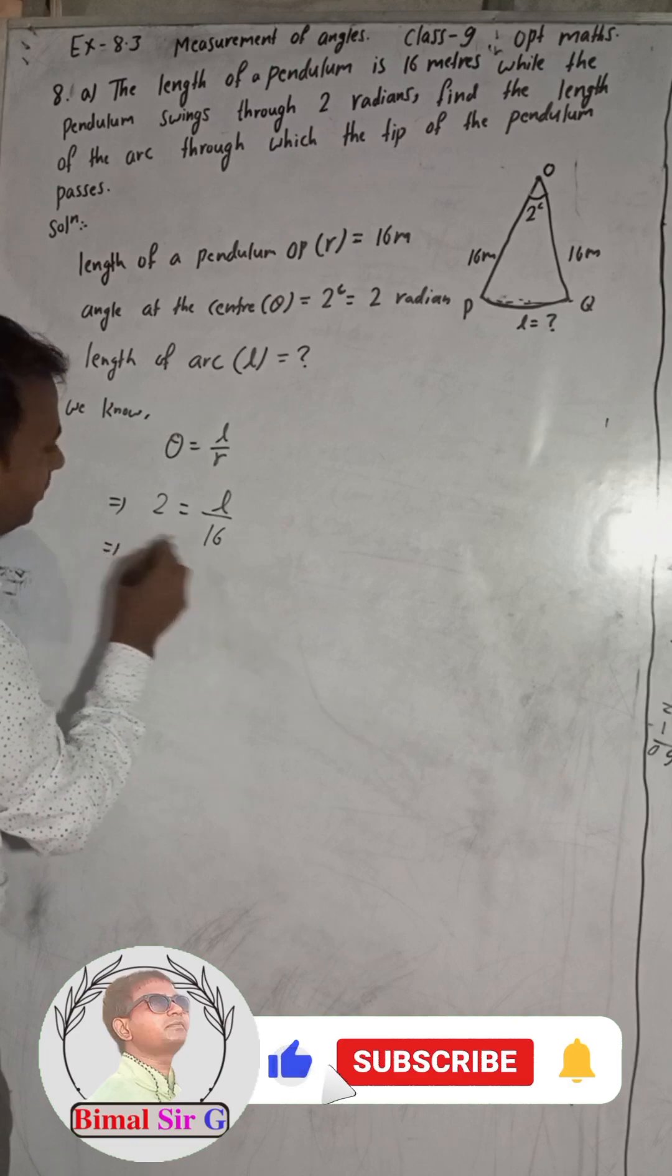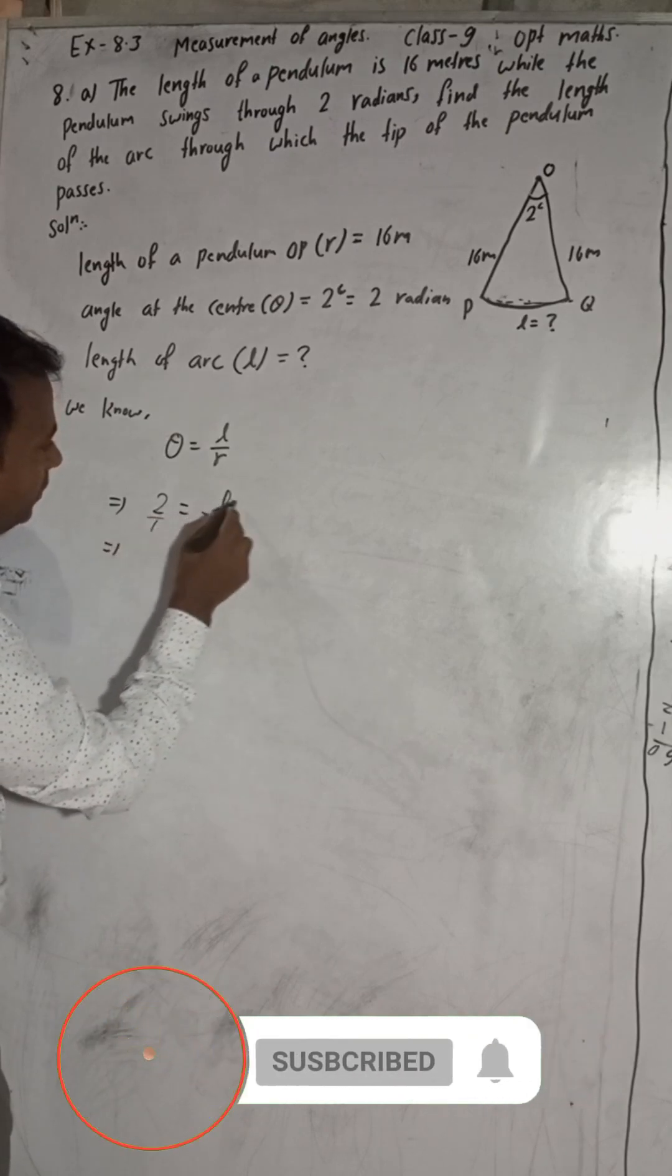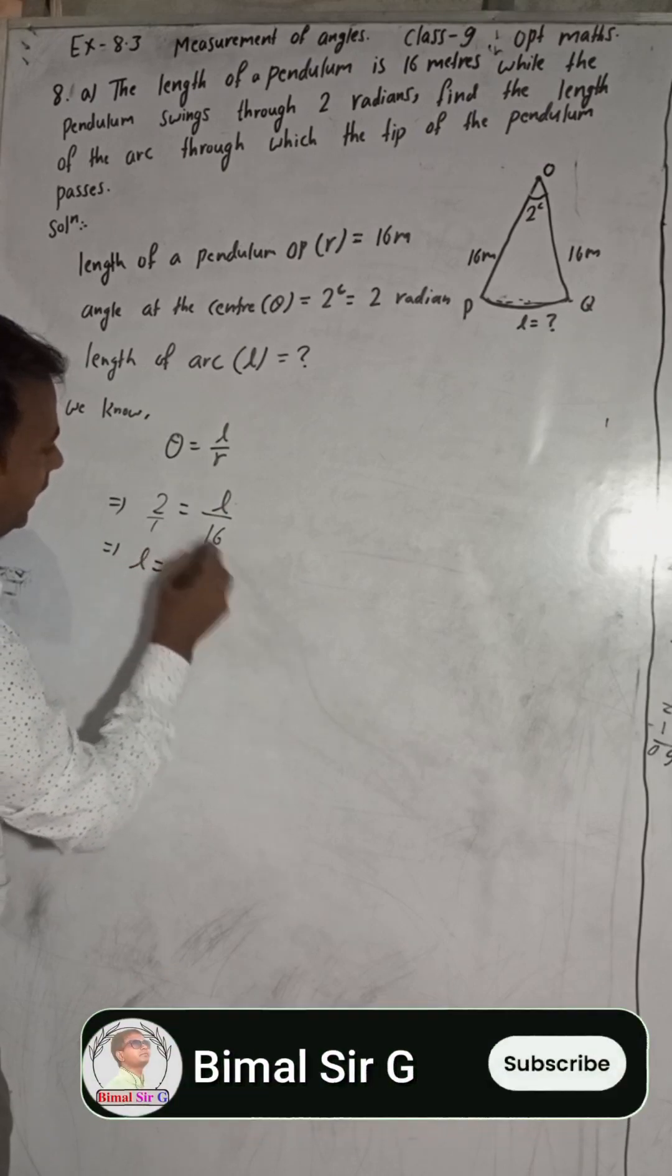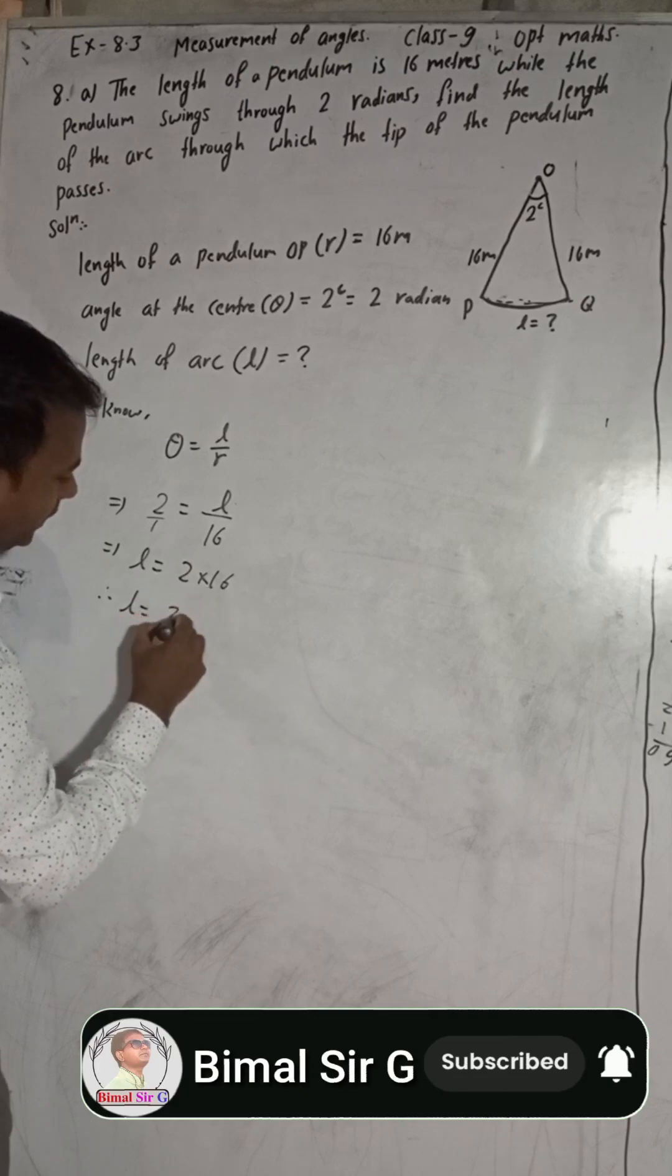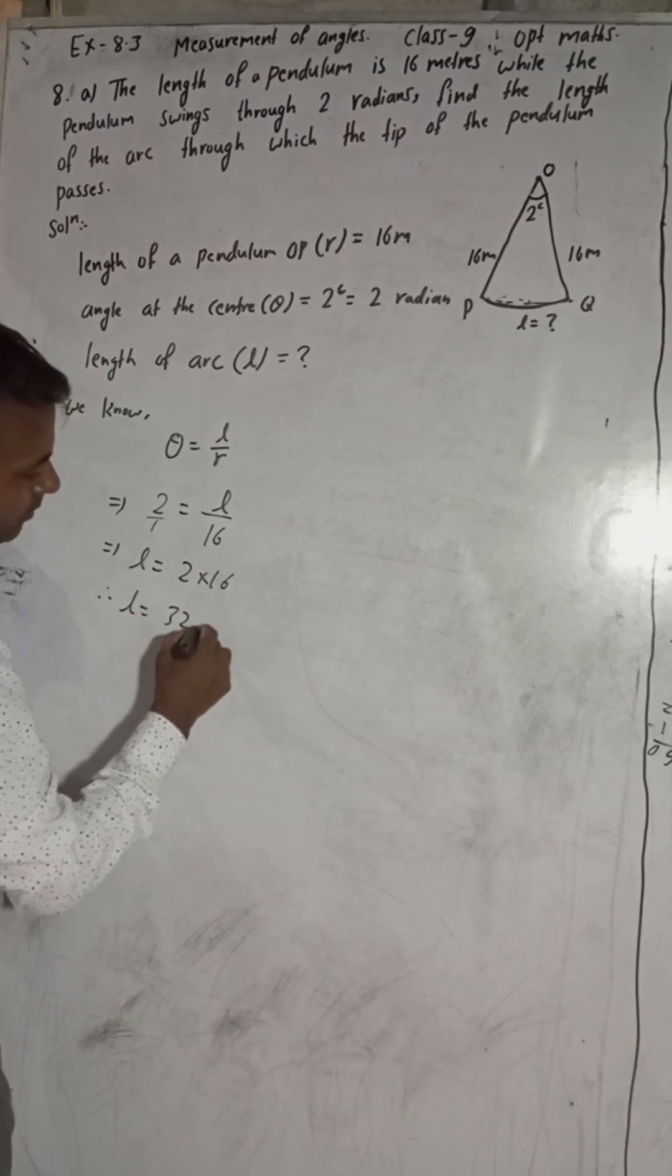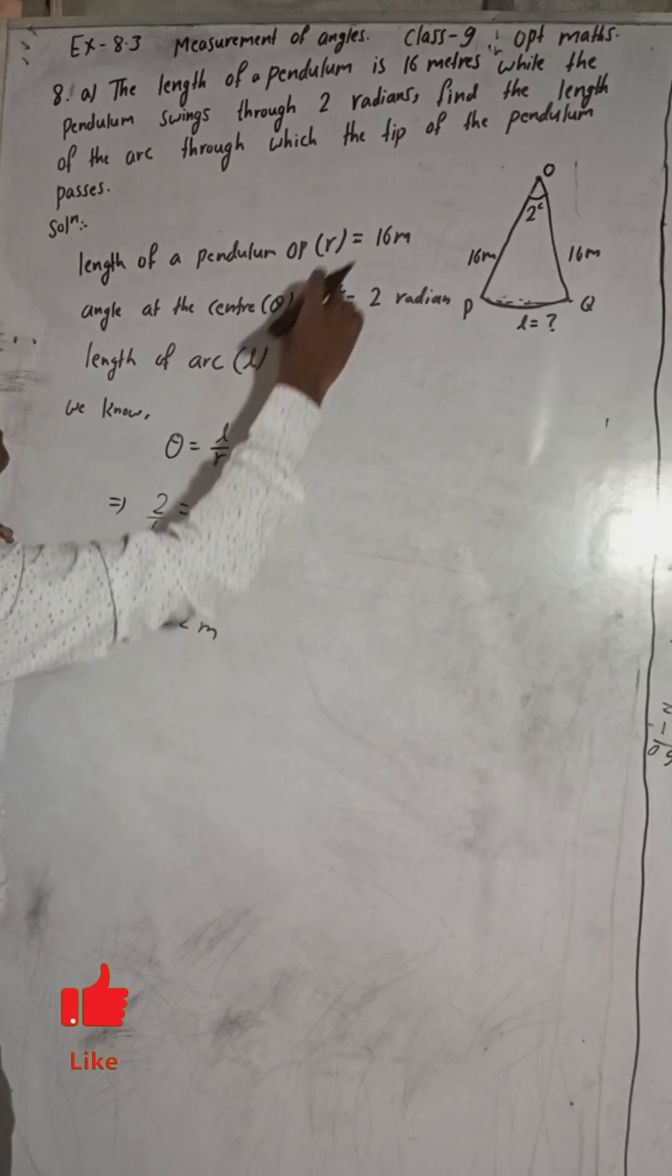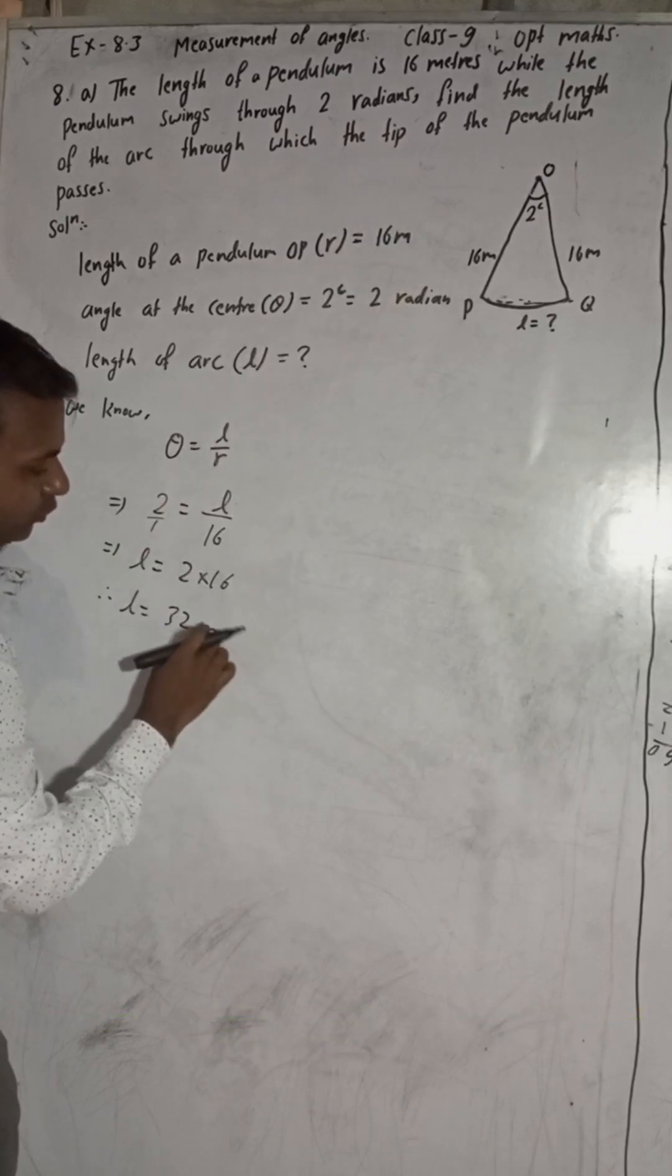So when we cross multiply, this is nothing, means there is 1. L into 1 means L, and 2 into 16. Therefore, L is equal to 32. Our length of the arc is 32 meters.